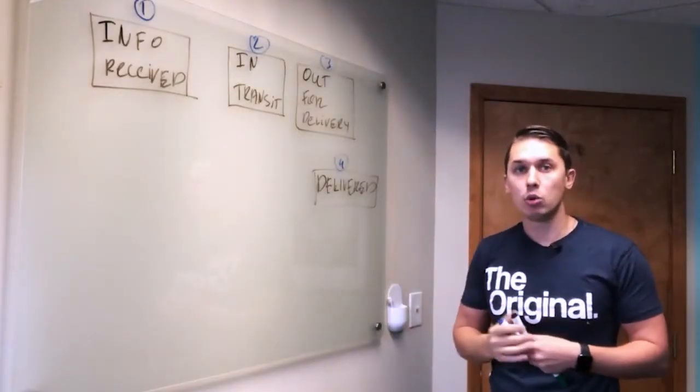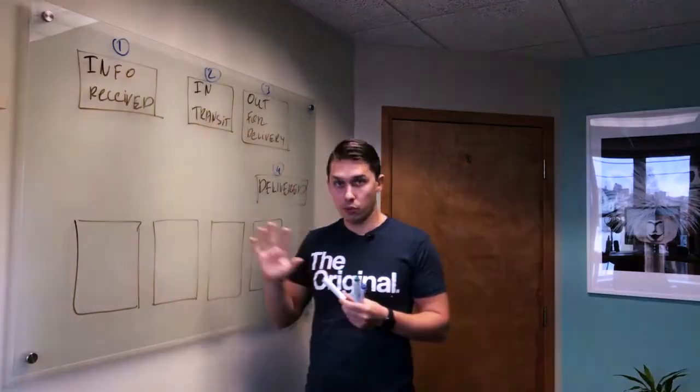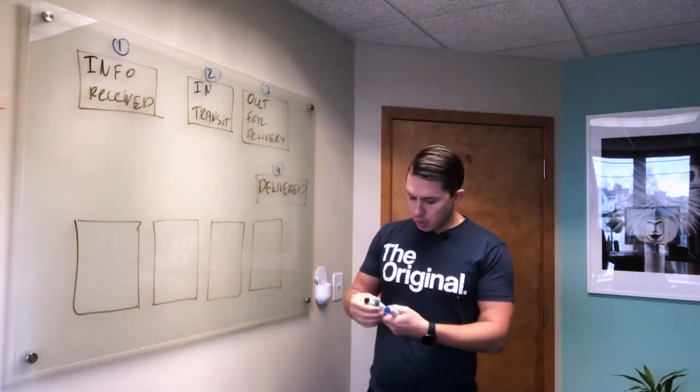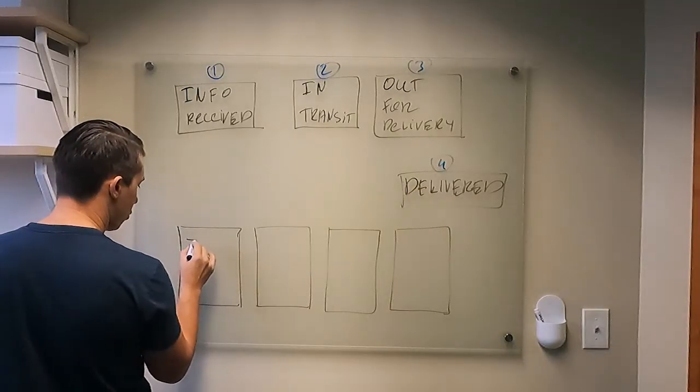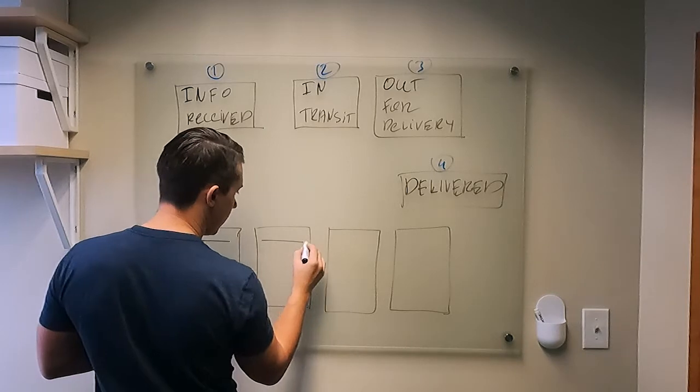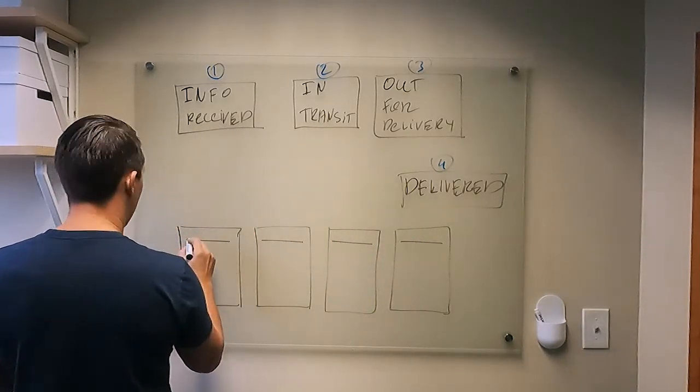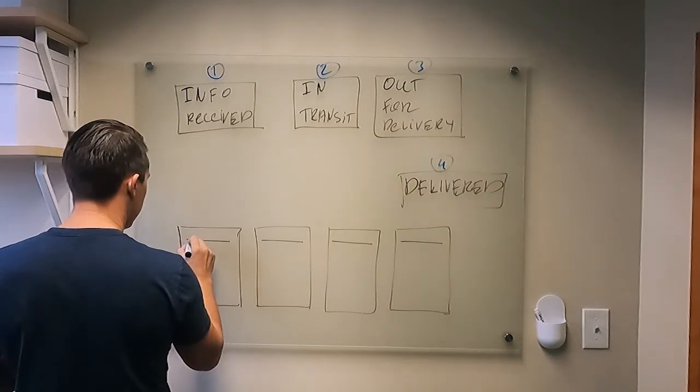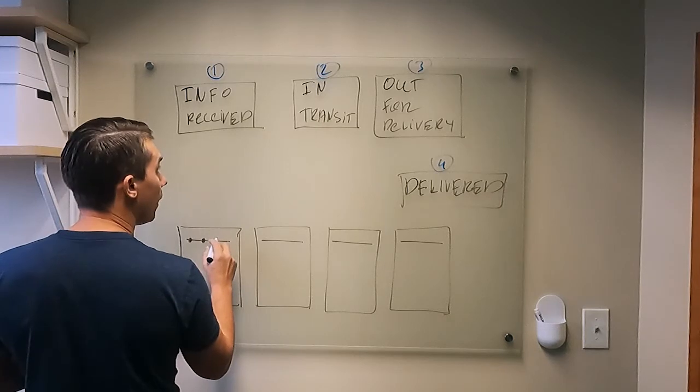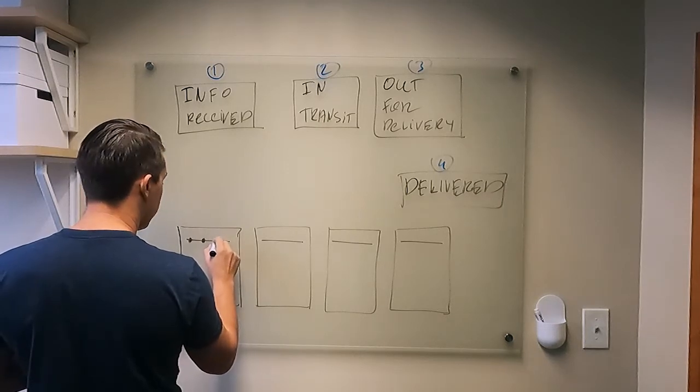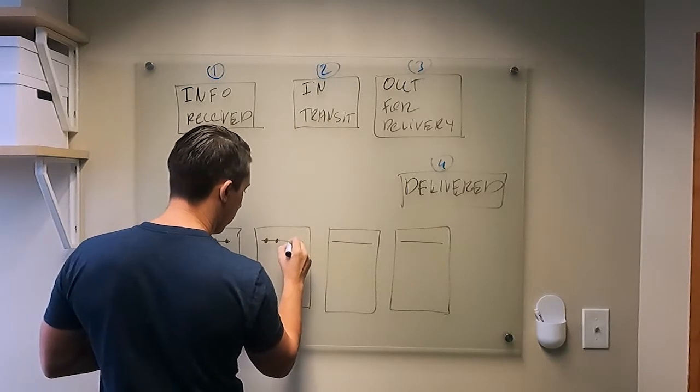So the next thing is we need to create four different emails. In each email, we will have a timeline with four statuses. Like info received, in transit, out for delivery and delivered. So I'll just do it quickly everywhere.